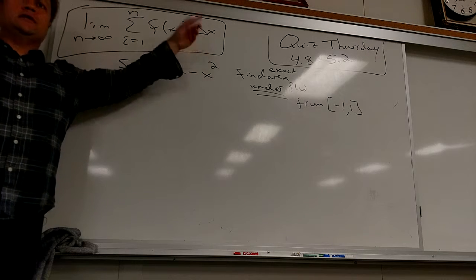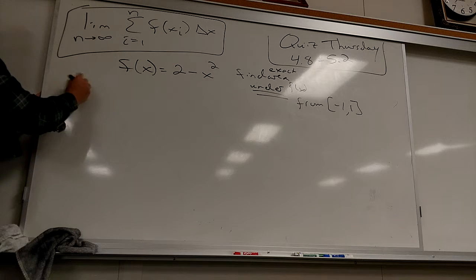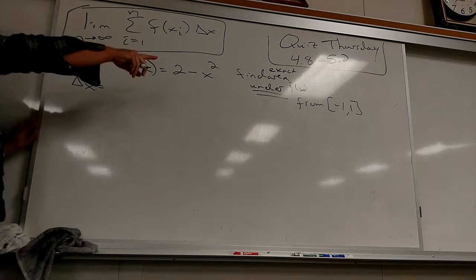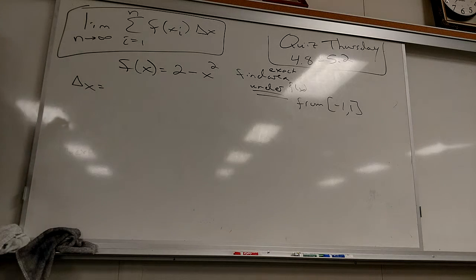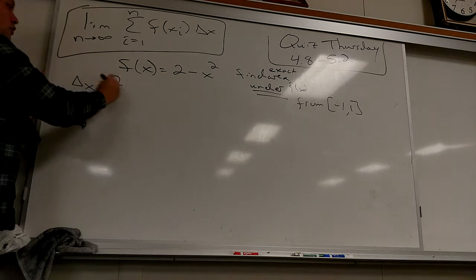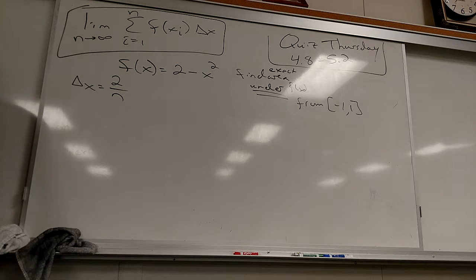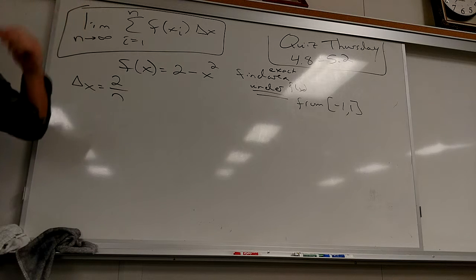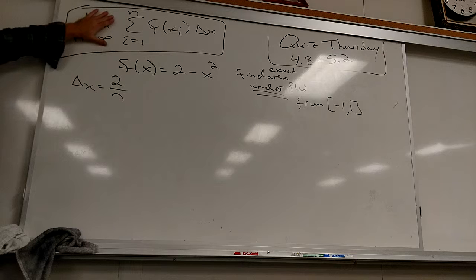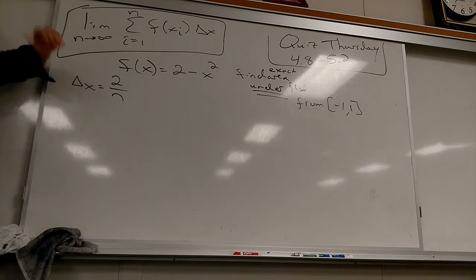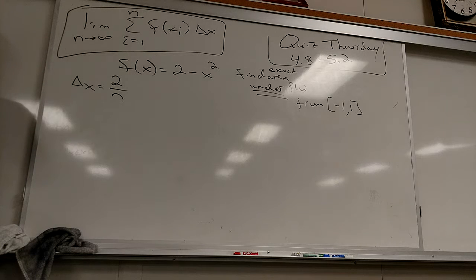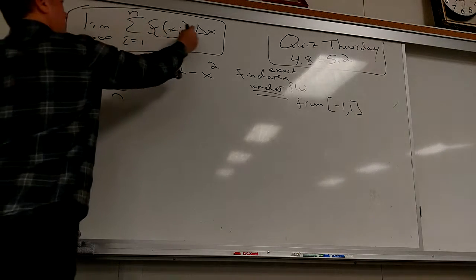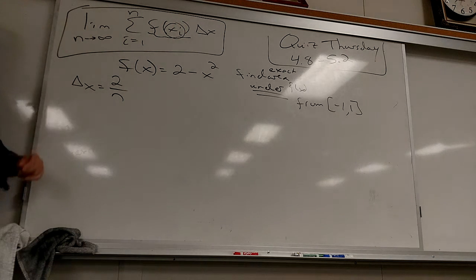What's the width going to be for this one? Two over n. I've got to cover a region two wide, and I'm going to use n rectangles — eventually let it go to infinity. So how wide does each rectangle have to be? Two divided by n. Now what can I build off of that? To get f of xi, I need this guy first. Can anybody tell me anything about this function — what the picture would look like?